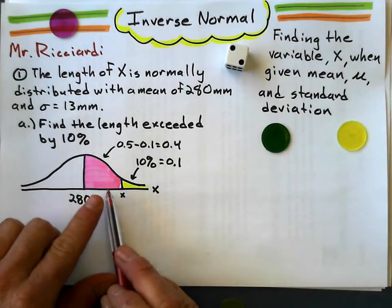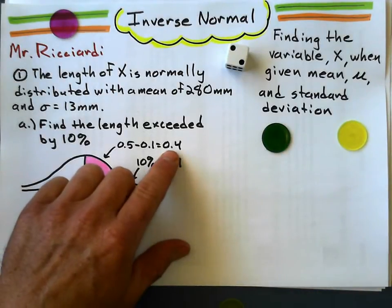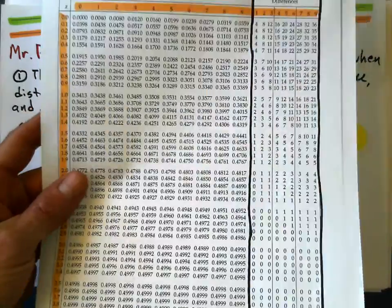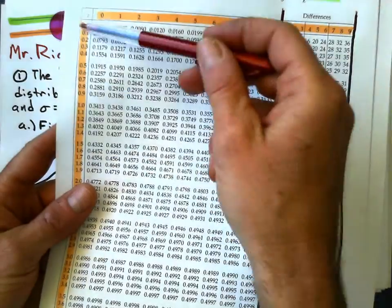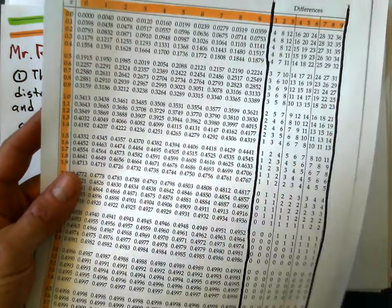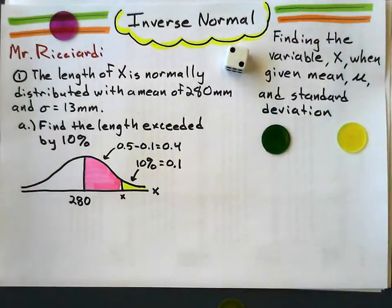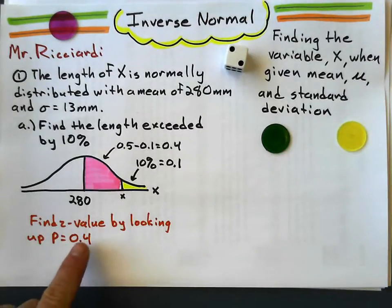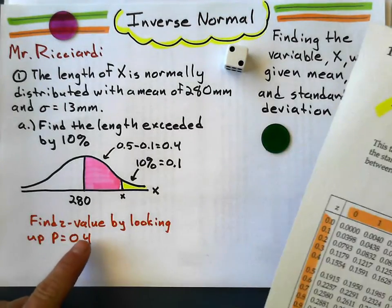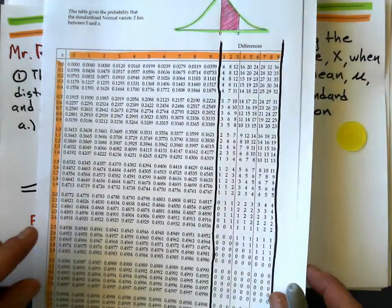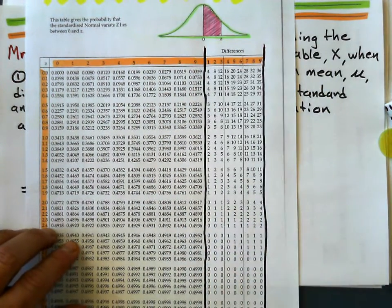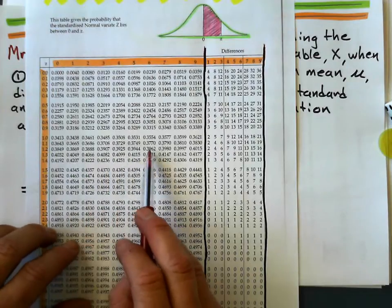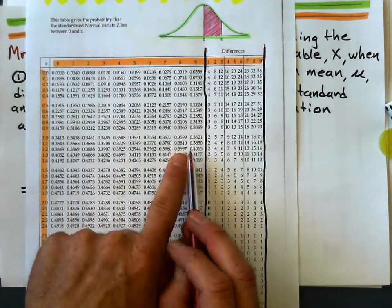And now what I do is I look up this probability of 0.4 on my z-table. Remember, these are the probabilities, and these are the z-values. So I'm going to find 0.4 on here. Now, what you'll find is 0.4 as a probability won't be on here exactly, so we want to see how close we can get. I go, well, 0.39, I get pretty close here.